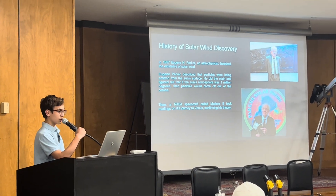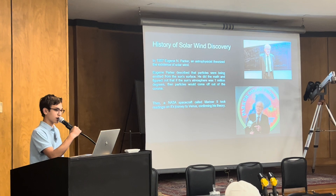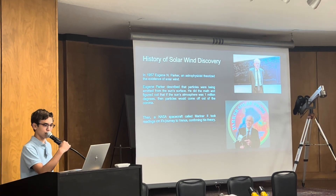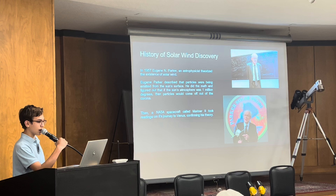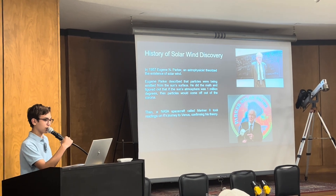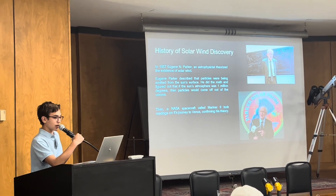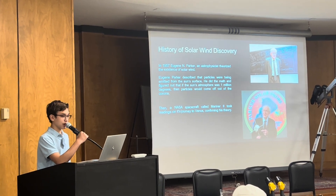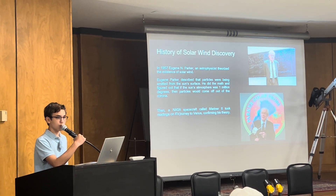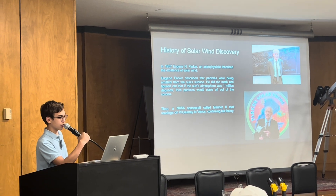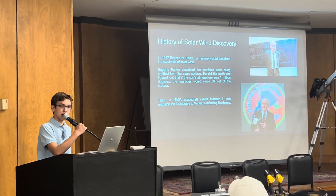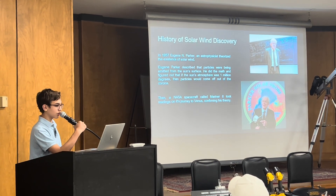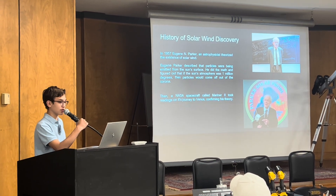In 1957, Eugene N. Parker, an astrophysicist, theorized the existence of the solar wind. He described particles being emitted from the sun's surface and calculated that if the sun's atmosphere really was a million degrees, particles would flow out as a coronal solar wind. A NASA spacecraft called the Mariner 2 then took readings on its journey to Venus, confirming his theory.